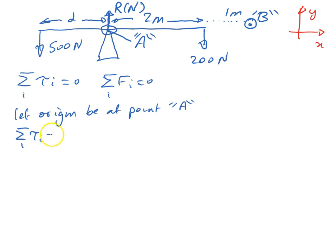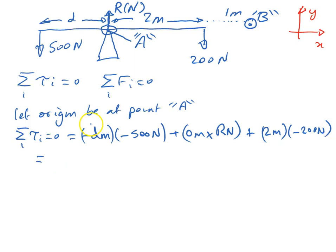Allowing for the signs of all quantities, we have minus d metres times minus 500 newtons, plus zero metres times r newtons, plus two metres times minus 200 newtons. So expanding that, we have minus d metres times minus 500 gives us plus. We can ignore this term completely, and we have minus 2 times 200 is minus 400 newton metres.